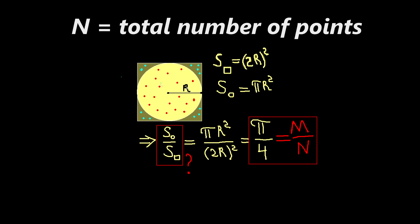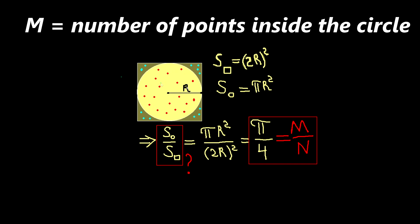Here, N is the total number of experiments we simulated, that is, the total number of points we generated, and M is the number of successful outcomes, or in other words, the number of points inside the circle.